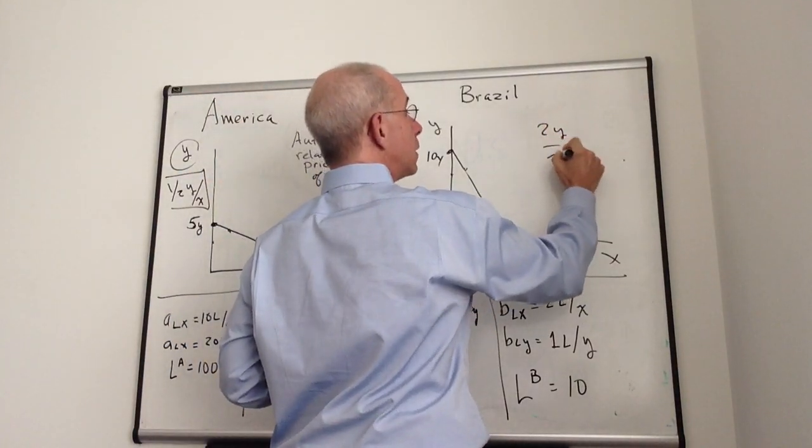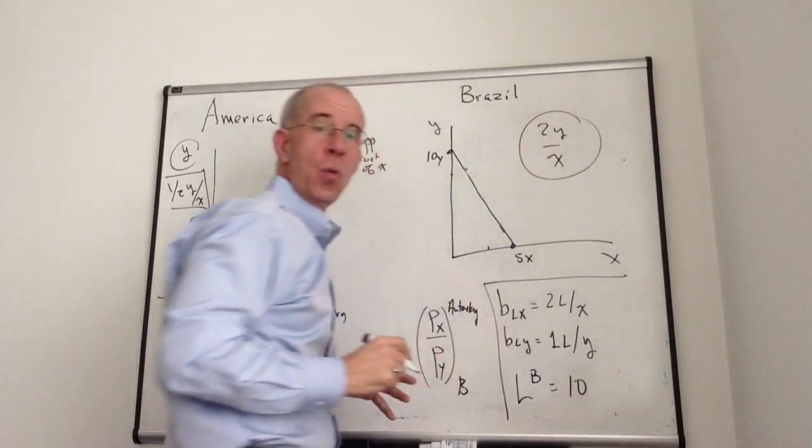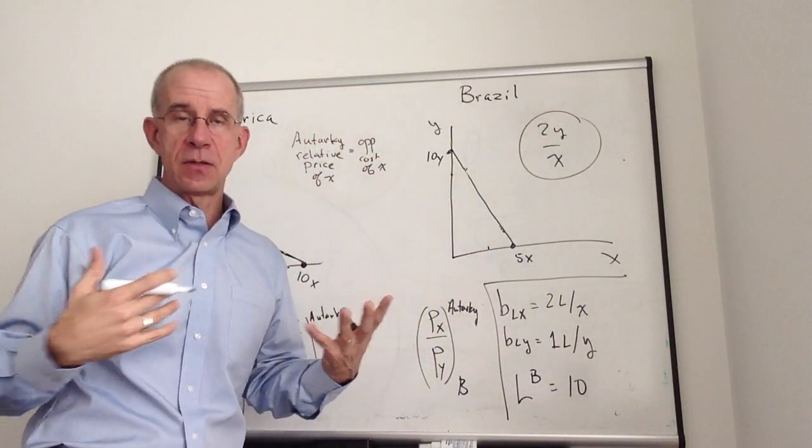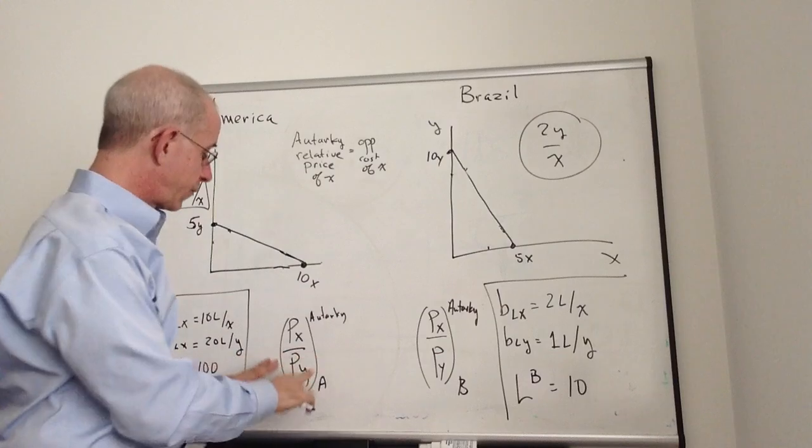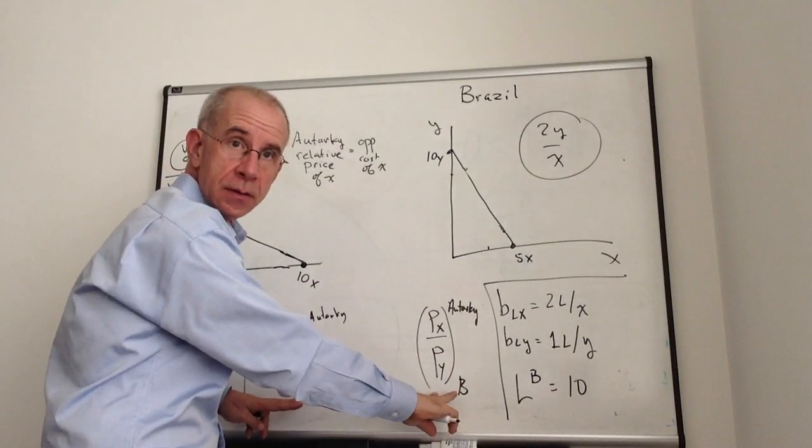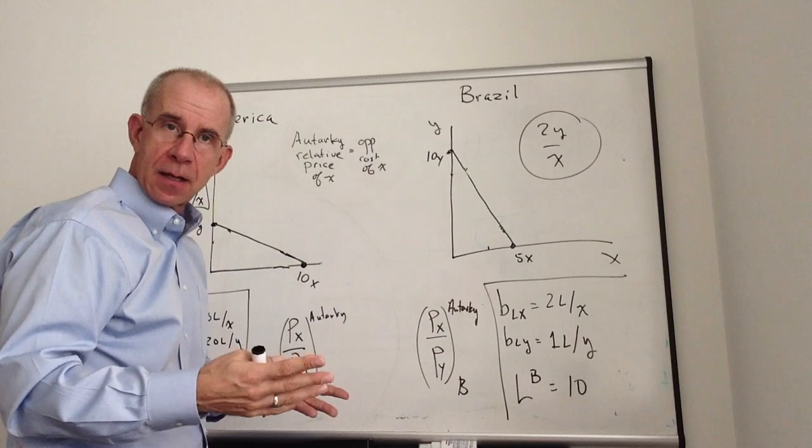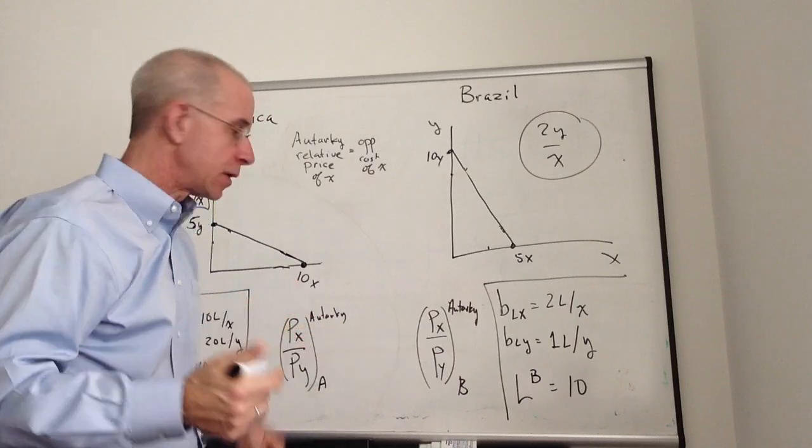If the relative prices reflect the relative cost of making these two goods, then we would have this relative price of X in autarky: one-half for America. And for Brazil, it's two Y per X. So the relative prices in the two countries are different and reflect the underlying opportunity cost.